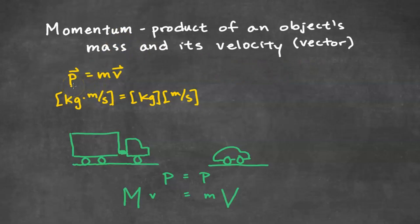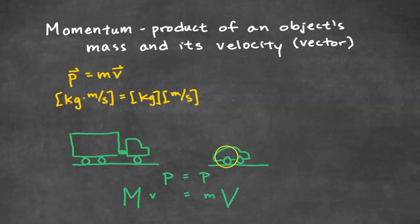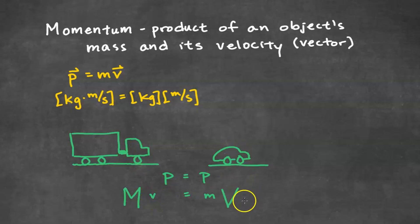The direction of the momentum is in the same direction as its velocity. Since the unit for mass is kilograms and the unit for velocity is meters per second, the unit for momentum is kilograms meters per second. Here we have a large truck and a small car, and they have the same momentum. The large truck has a large mass and the small car has a small mass, but that means the large truck has a smaller velocity and the small car has a large velocity. If their mass times velocity is equal to each other, we say they have the same momentum.